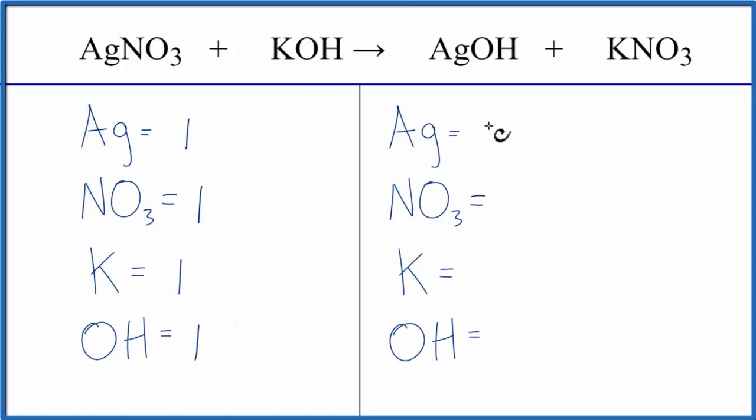On the product side, we have one silver, one nitrate, one potassium, and one hydroxide, one of the OHs.